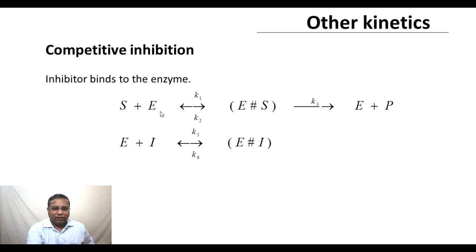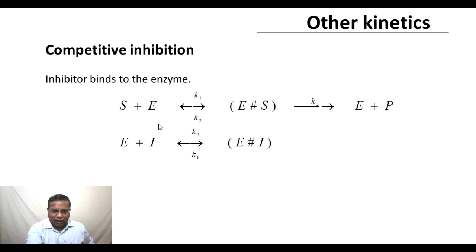The substrate plus enzyme bind together to give you the enzyme-substrate complex. This is a reversible reaction — K1 is the forward rate, K2 is the reverse reaction rate. The enzyme-substrate complex gives the enzyme and the product. This was the simple Michaelis-Menten enzyme kinetics. In addition, we have an inhibitor molecule that interacts with the enzyme reversibly to give an enzyme-inhibitor complex. This kind of reaction scheme is called competitive inhibition.